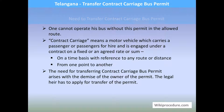Let us see the need to transfer a contract carriage bus permit. When you use this permit to run a business of transporting employees or students and need to transfer this agreement, the need arises with the demise of the owner of the permit — the legal heir has to apply for transfer because one cannot operate the bus without a valid permit. Contract carriage means a motor vehicle which carries passengers for hire, engaged under a contract at a fixed or agreed rate on a time basis with reference to any route or distance.